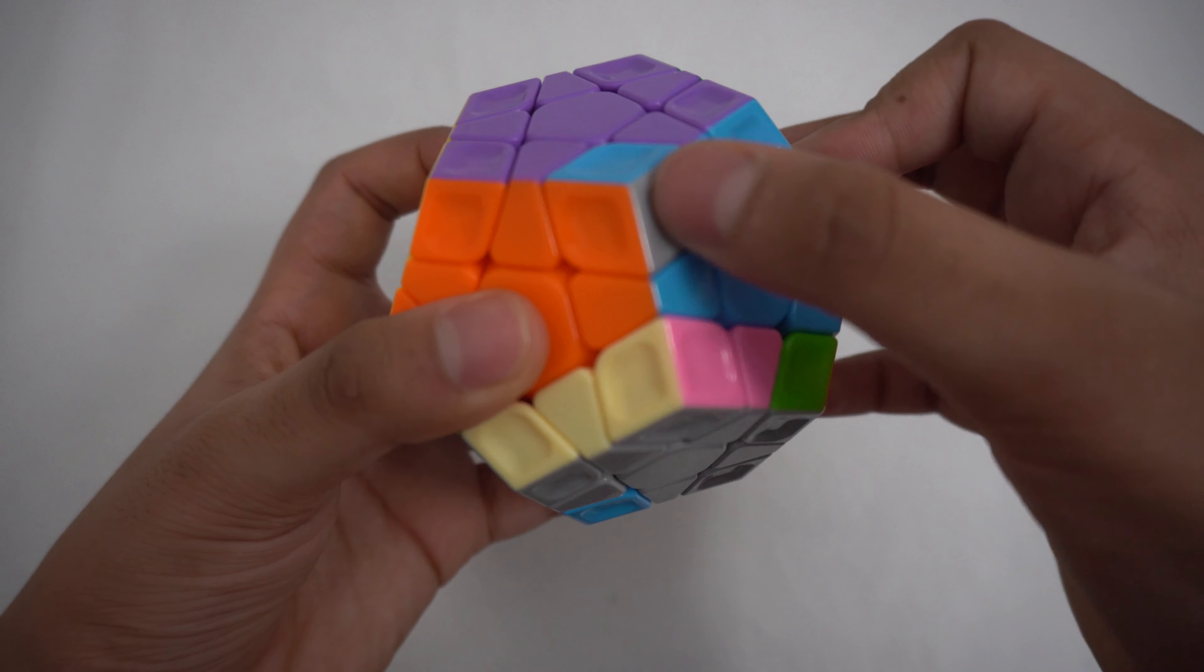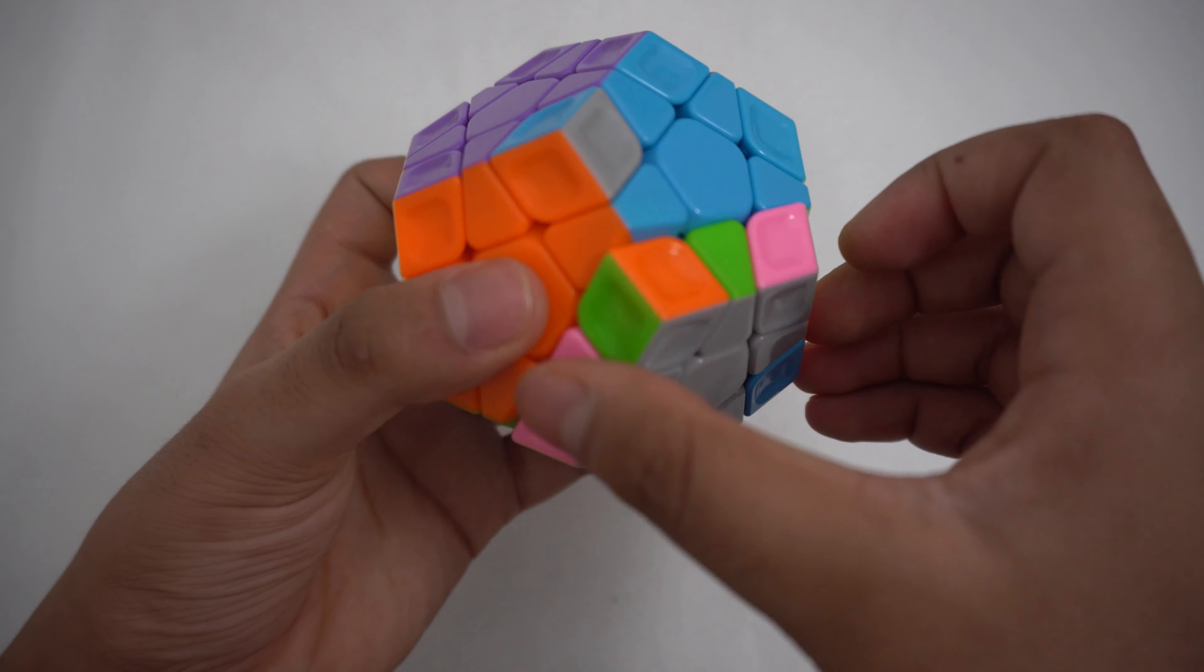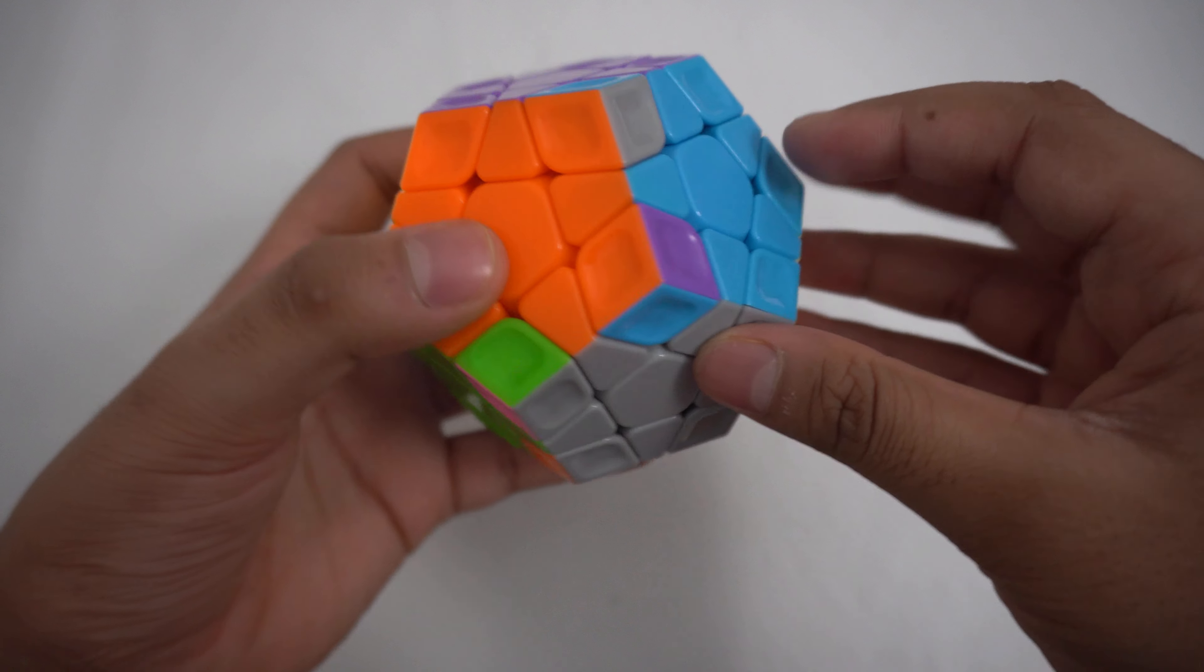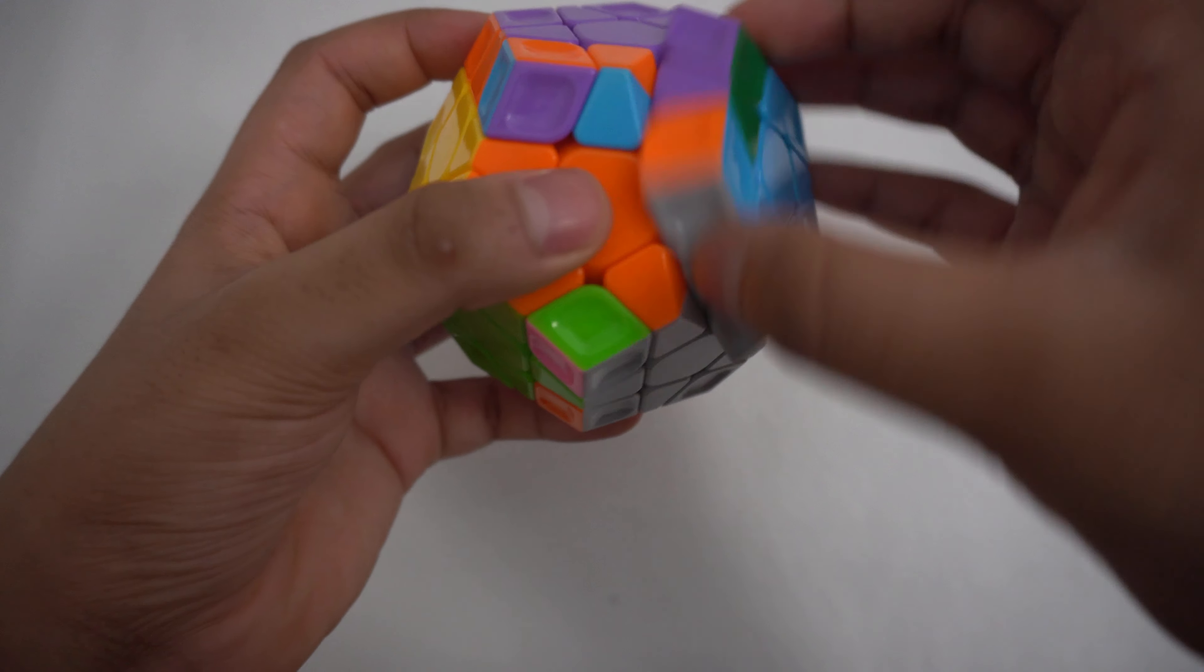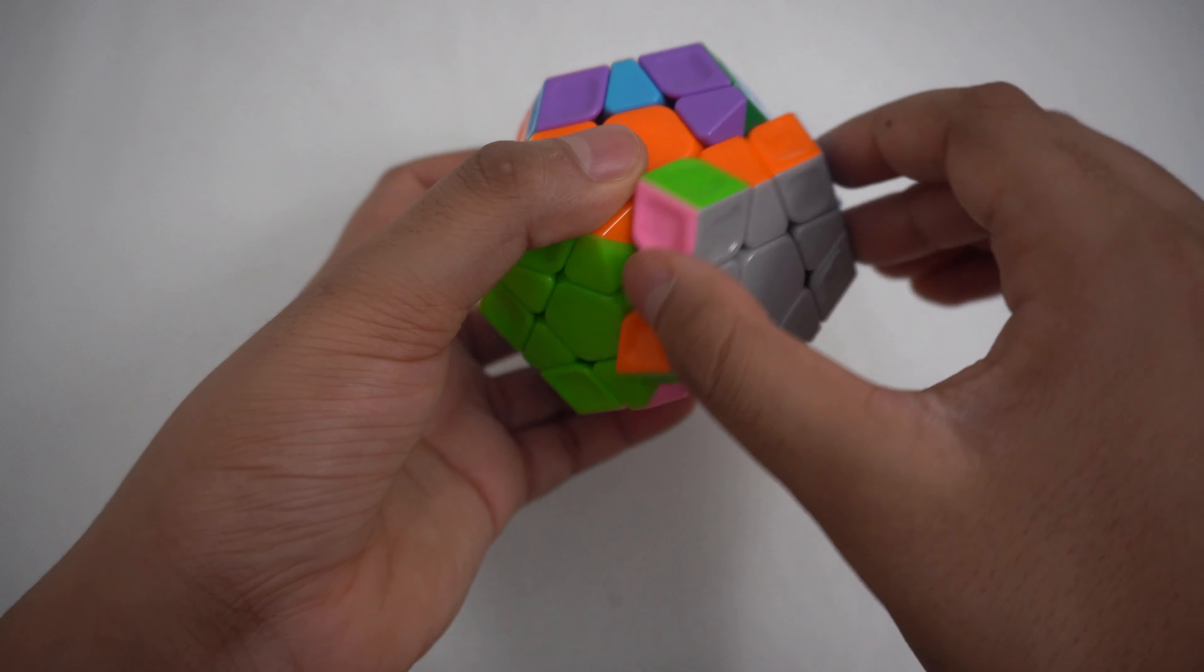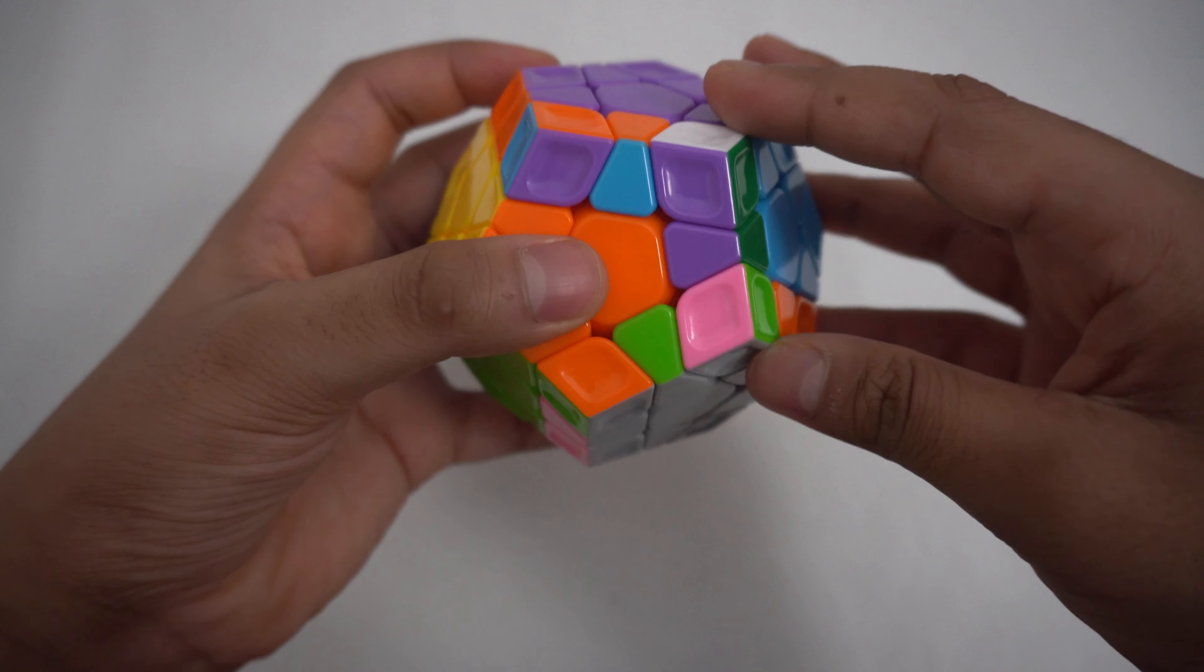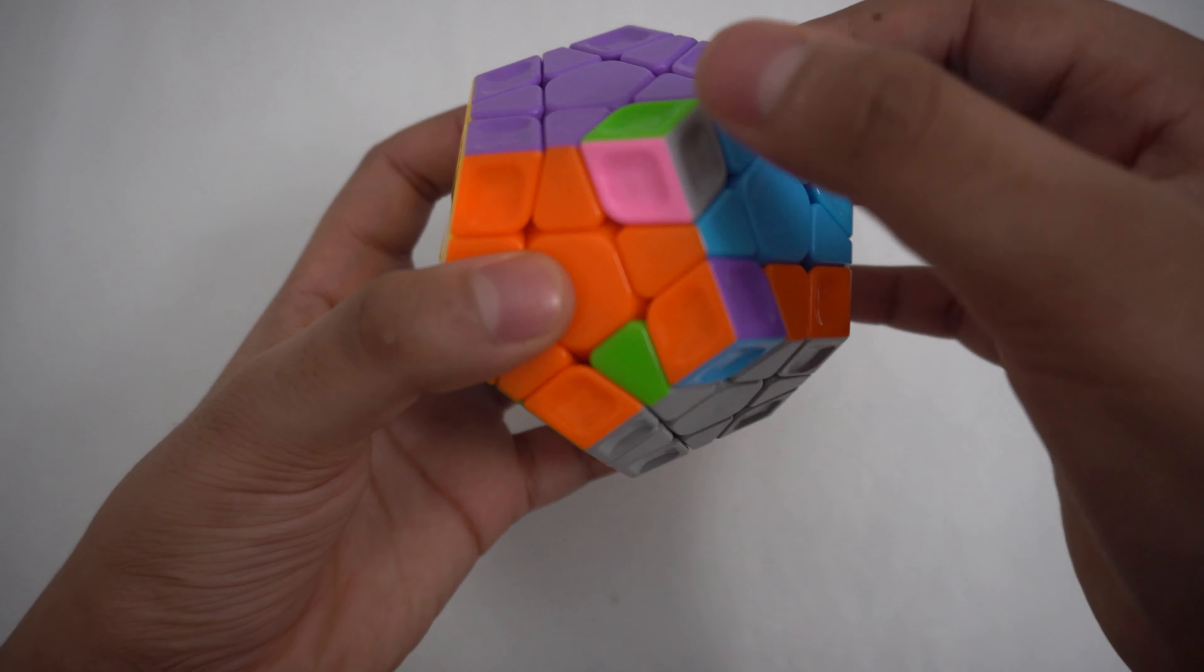Then we look at the gray edge piece on top that we have and identify the colors. Then we find the spot with the same colors and put it in the bottom right and do R U prime R prime. If you have a situation where there's no gray pieces on the top, then find an unsolved edge and bring it to the bottom right facing you and do R U prime R prime. Then solve like normal.